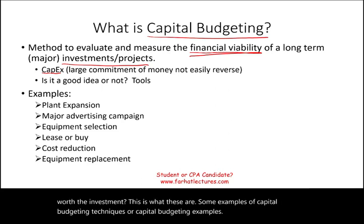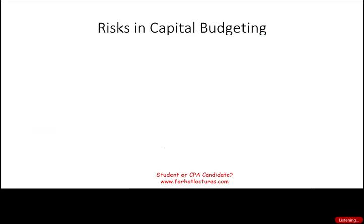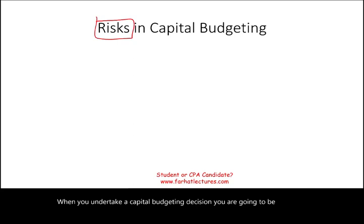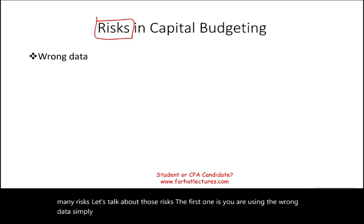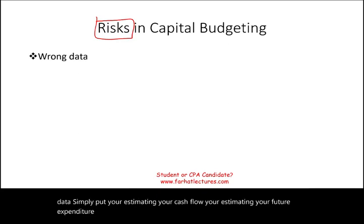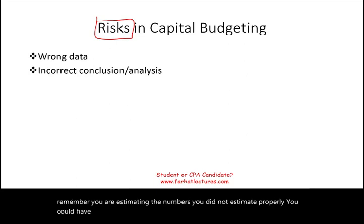When you undertake a capital budgeting decision, you are going to be facing many risks. The first one is using the wrong data. Simply put, you're estimating your cash flow, estimating your future expenditure, and you did not estimate properly. You could have estimated properly and arrived at the wrong conclusion, or you used the wrong analysis — that's also a risk.